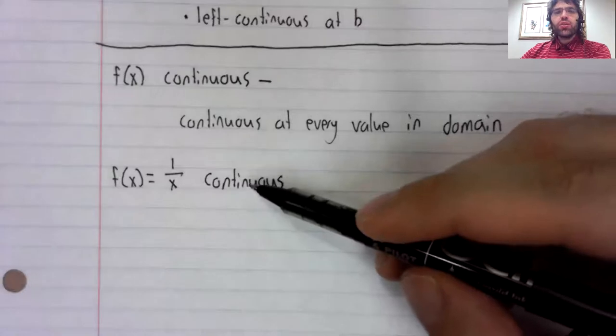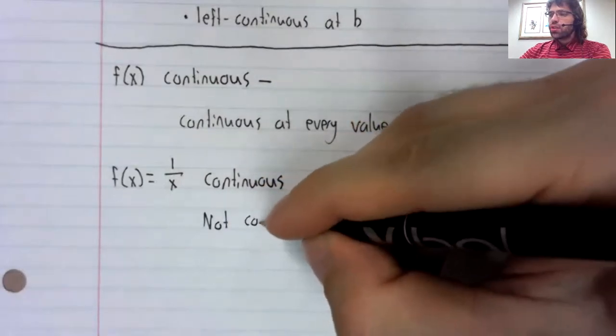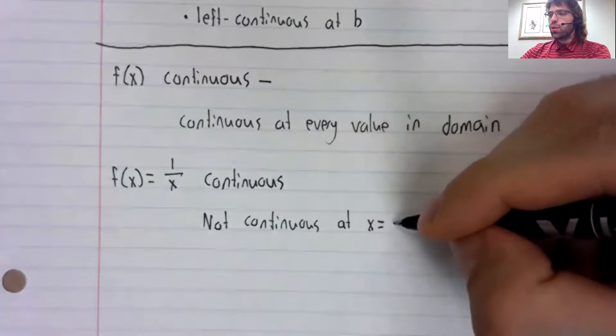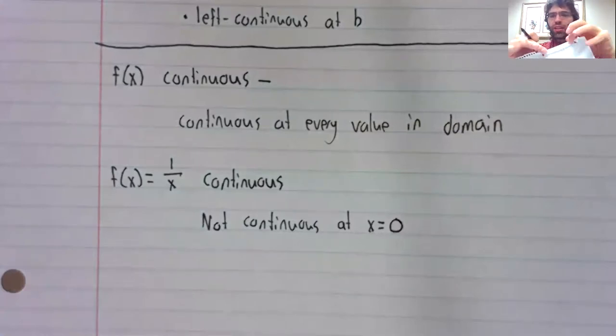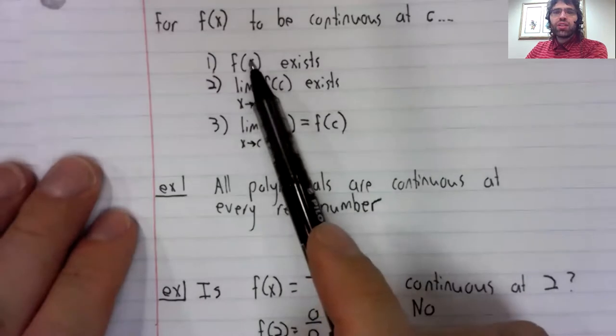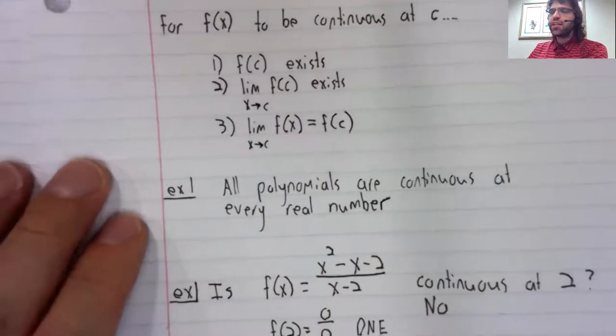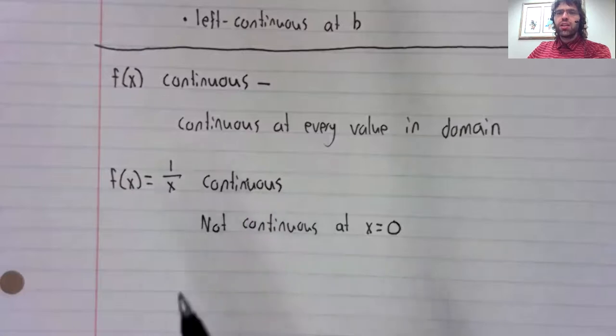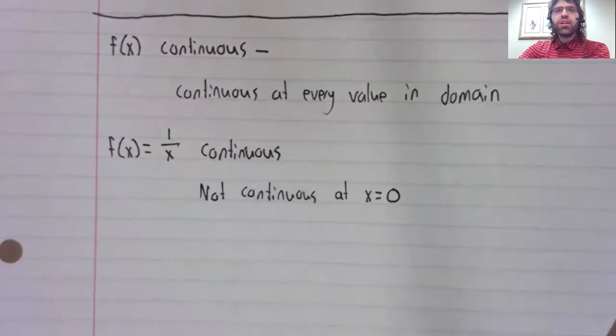And yet this continuous function is not continuous at zero. Zero is not in the domain of this function. If you look at the definition of continuity, it fails this very first condition. One divided by zero does not exist. So this is a continuous function that has points where it's not continuous. That can be confusing.